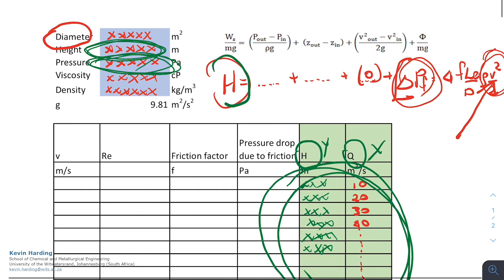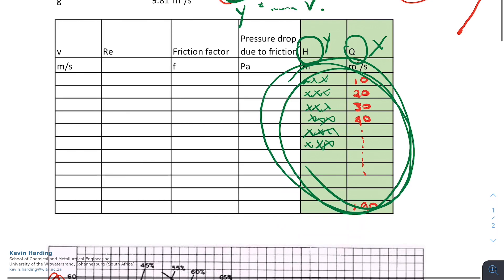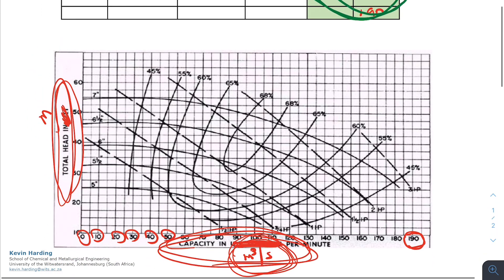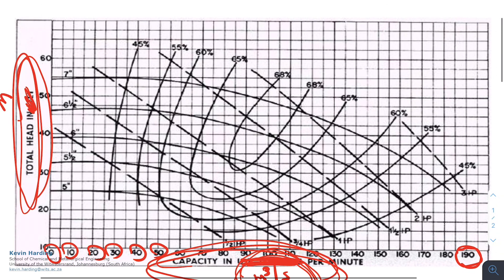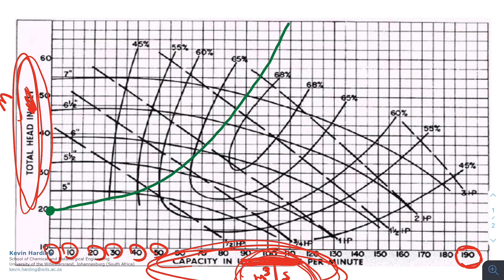This curve, if we now just go back up quickly, we said that H, that's our Y, is equal to something, something, something, and we had a velocity squared term in here. Because of that velocity squared, you're going to find that your system curve is going to start at some point, and because of that squared nature, it's going to go up as per the squared. The distance from the bottom to the top, you'll find, is going to be the difference in your delta Z. So if there is no delta Z, this will actually start at the origin.